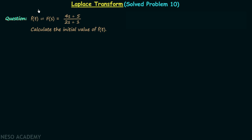In this question we have a time domain signal F(t) and its corresponding bilateral Laplace transform F(s) is equal to (4s + 5) divided by (2s + 1). We are required to calculate the initial value of the time domain signal F(t).